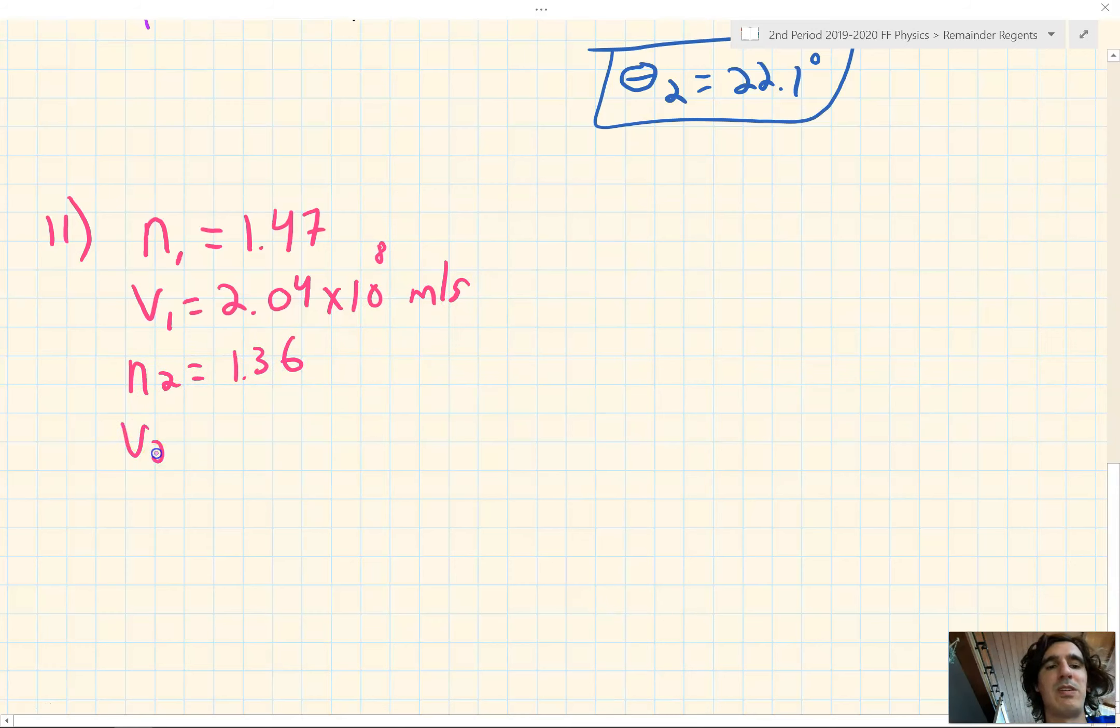So we have a couple formulas we could use. If we look at our reference table, we have n₁ over n₂ equals v₂ over v₁. In this case, we want to solve for v₂. We don't care about the lambda₂ over lambda₁, because we're not given it, nor are we finding it. Or we could also use n equals c over v. We know n for ethyl alcohol. We know c, the speed of light in a vacuum. We want to find v₂, the speed of light in ethyl alcohol. Why don't we use this one, n equals c over v, because it requires a little bit less algebra.